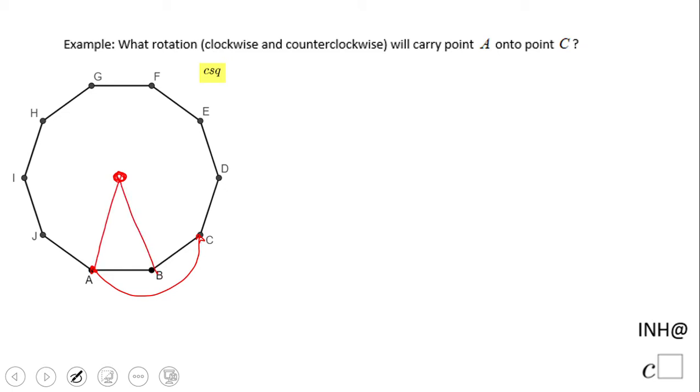To find the central angle, we're going to count how many sides we have: one, two, three, four, five, six, seven, eight, nine, ten. We have ten sides.